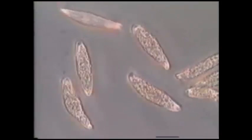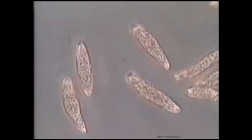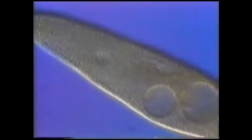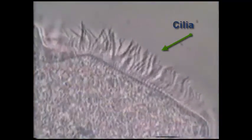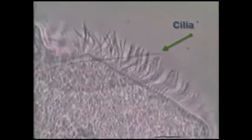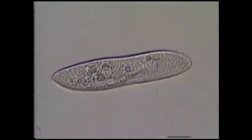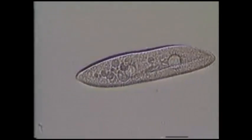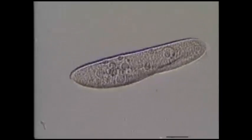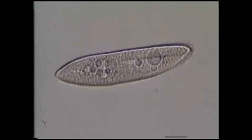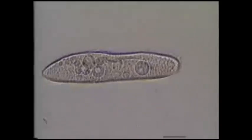Some organisms' flagella rotate in a screw-like motion to propel the organism through water or some other liquid. Flagella often occur in pairs, though some organisms have a single flagellum. Cilia are much shorter and more numerous than flagella. They appear as short hair-like extensions of the cell. Unlike the rotating motion of flagella, cilia beat backward and forward to propel the cell, as in the paramecium, or to draw fluids over tissues.